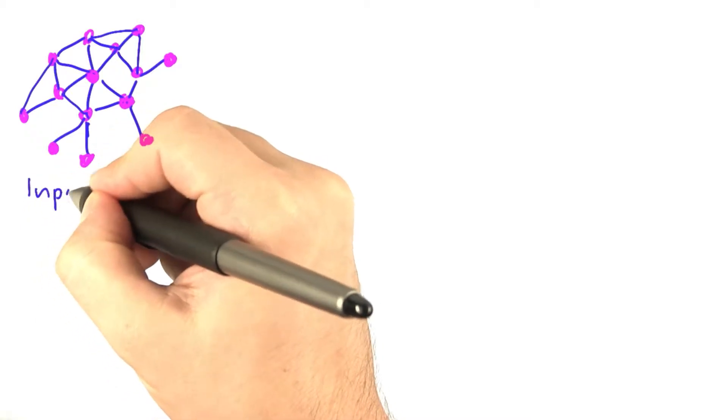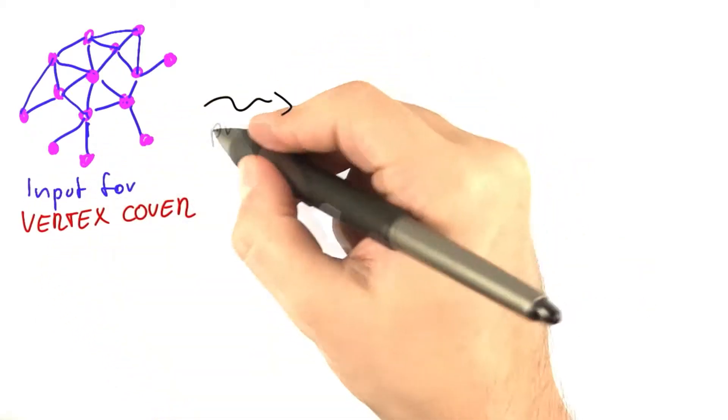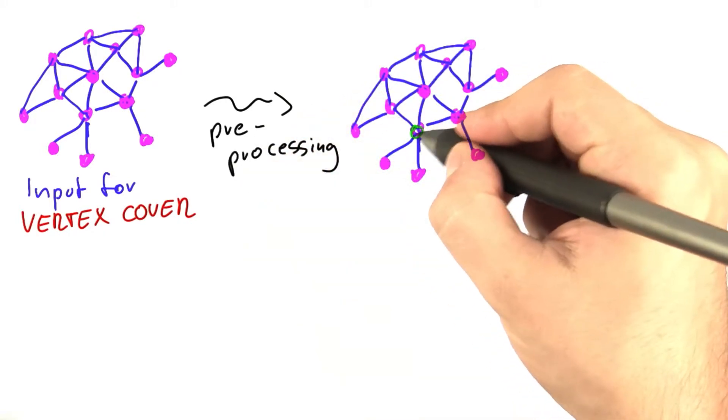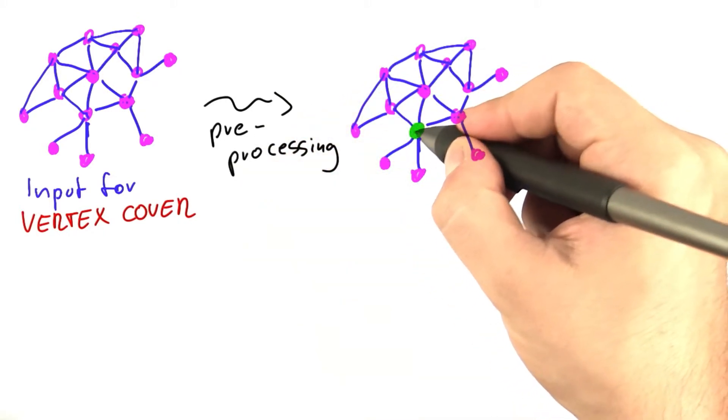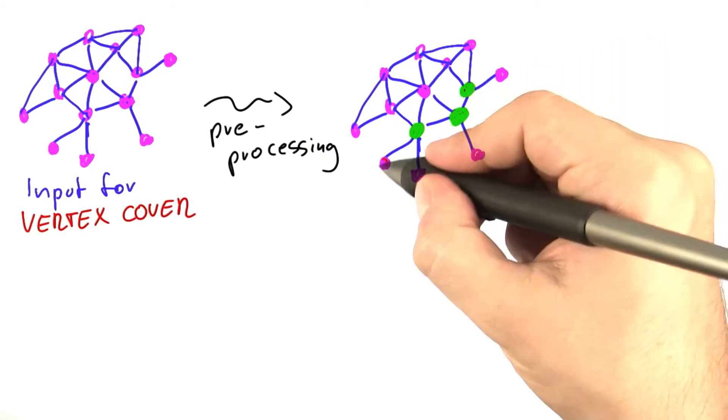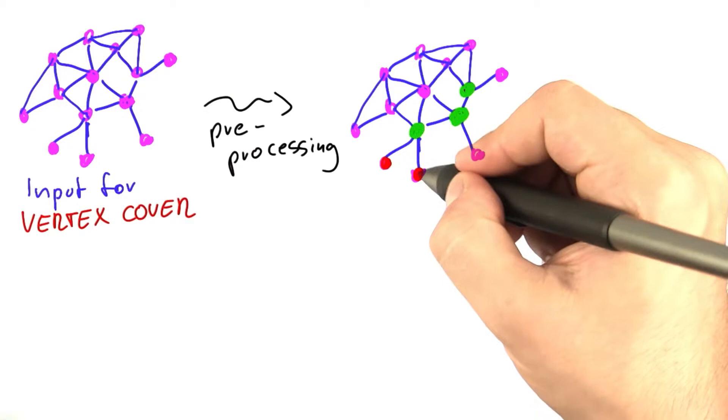So we started with an input for vertex cover, then apply preprocessing using the rule that we just discovered, which means we then already know that this vertex here must be put into the vertex cover as well as this one here and this one here, and these all do not have to be in the vertex cover.